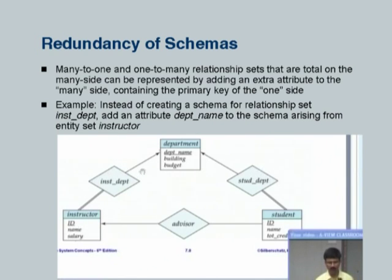Here is an example: we had instructor related to department by ins_dept. We could have created a table for ins_dept with attributes ID and department name. What is the primary key for this instructor-department table? It could have been ID, because a department may have many instructors but an instructor has only one department. So using ID and department name together is not a candidate key, because just ID by itself is enough.